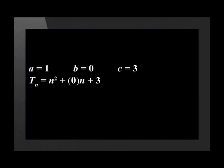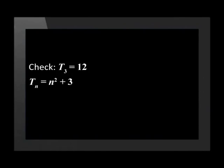Put those values back into the general term and you have TN equals N squared plus 3. You should always check if your general term is correct by finding one of the terms in the given sequence. For example, term 3 is 12. To check, substitute N equals 3 into the equation: 3 squared plus 3 is 9 plus 3, which is equal to 12. So we do get the right answer, and our general term is correct.